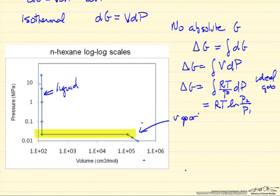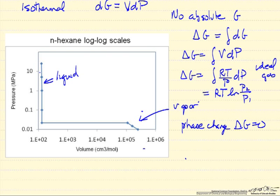We have a large volume change, but that all happens at one pressure, so for the phase change delta G is zero. And of course we use this relation for calculating phase equilibrium.